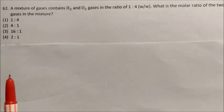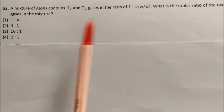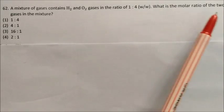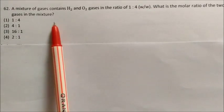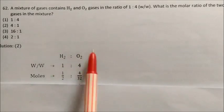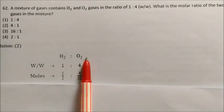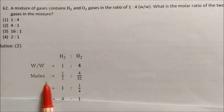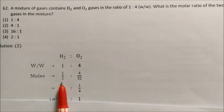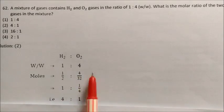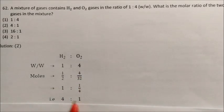Question: A mixture of gases contains hydrogen and oxygen in the ratio 1:4 by weight. What is the molar ratio of the two gases? Moles of H2 = 1/2 (molar mass = 2), moles of O2 = 4/32. Taking the ratio: (1/2)/(4/32) = (1/2) × (32/4) = 4. So molar ratio H2:O2 = 4:1. Answer: option 2.